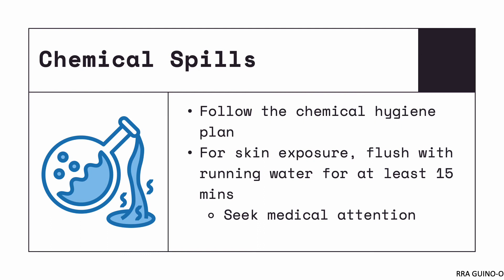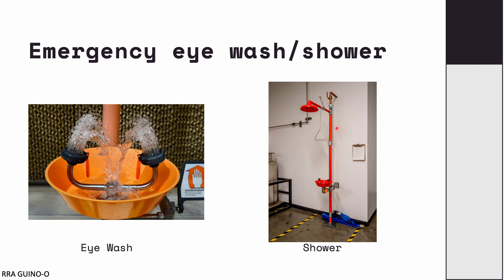In cases of chemical spills, the first thing you should always do is follow the chemical hygiene plan. Each institution should have a chemical hygiene plan in place, and you should be familiar with it before handling any chemical. If you spill chemicals on your skin, you have to flush it with running water for at least 15 minutes before seeking medical attention. Examples of equipment for this include an eyewash station and an emergency shower.